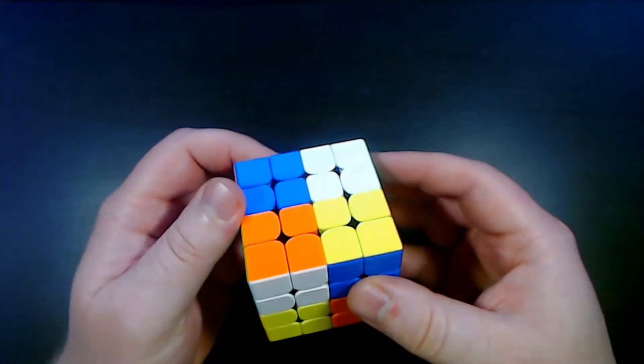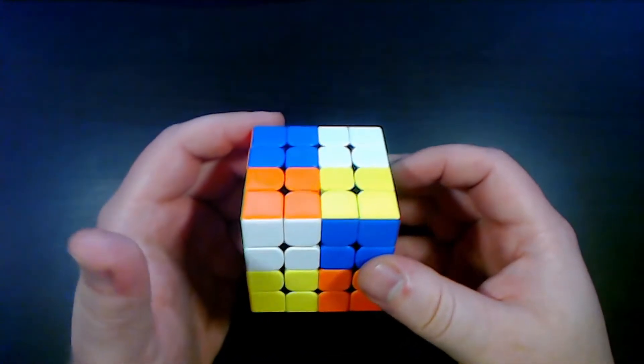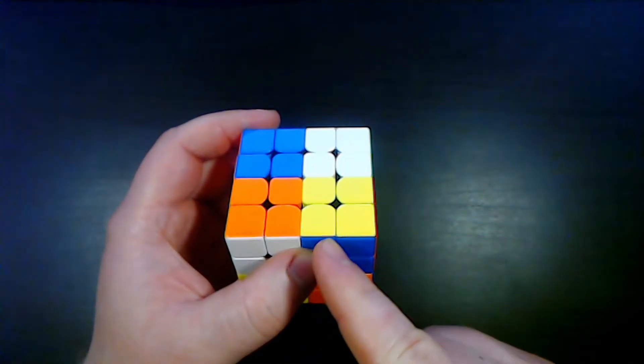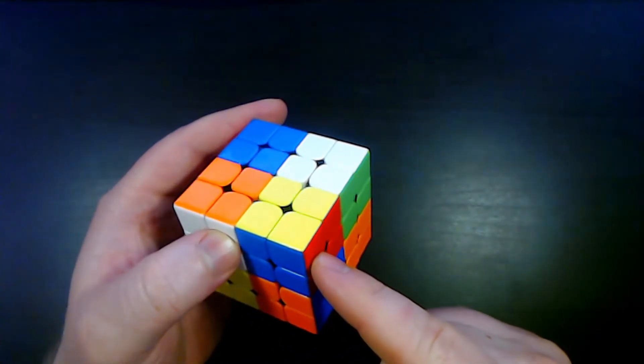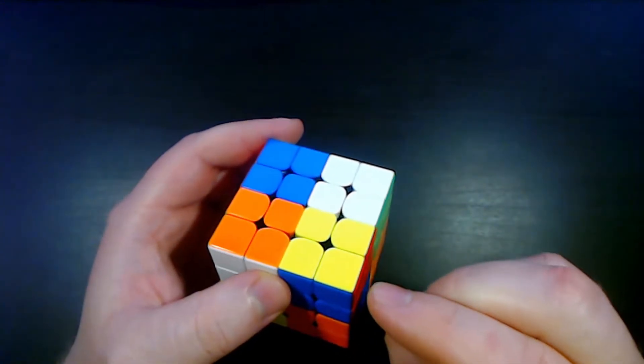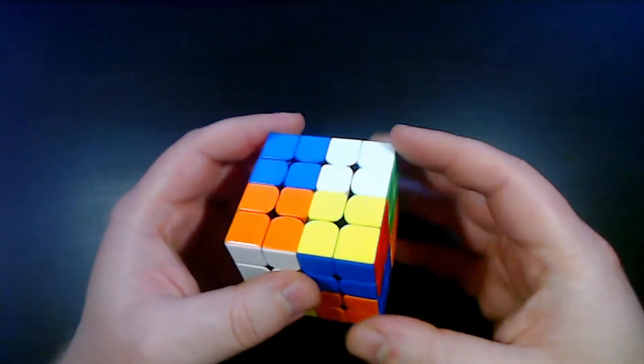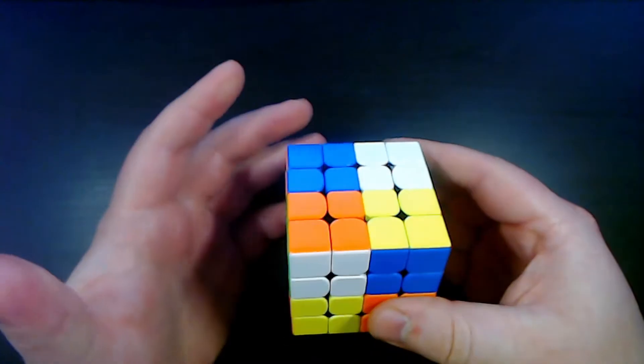So the first step is to solve the first six corners and what I mean by that is you pair up the three edge pieces with their correct corner and then that corner is considered solved. So you do that for any six corners and this step is complete, it's as simple as that.